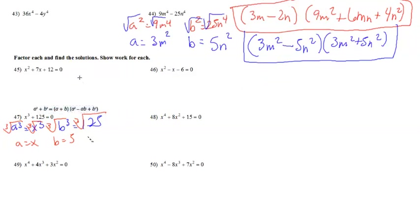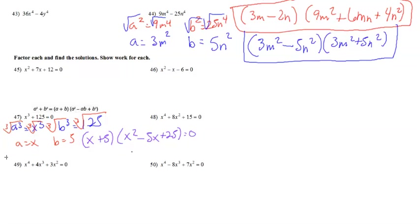Plugging into the formula, we get (x + 5)(x² − 5x + 25) = 0. Setting each factor equal to zero: if x + 5 = 0, then x = −5. That's one solution.